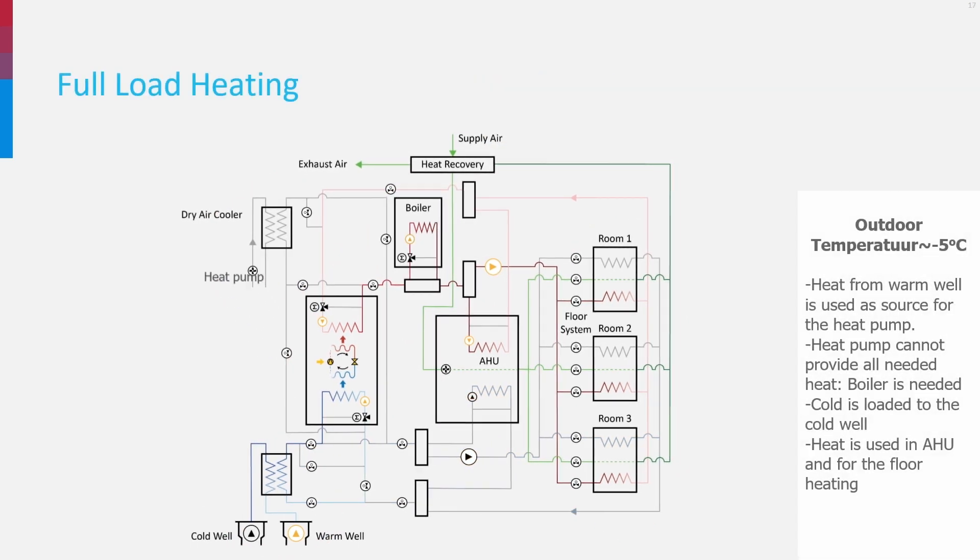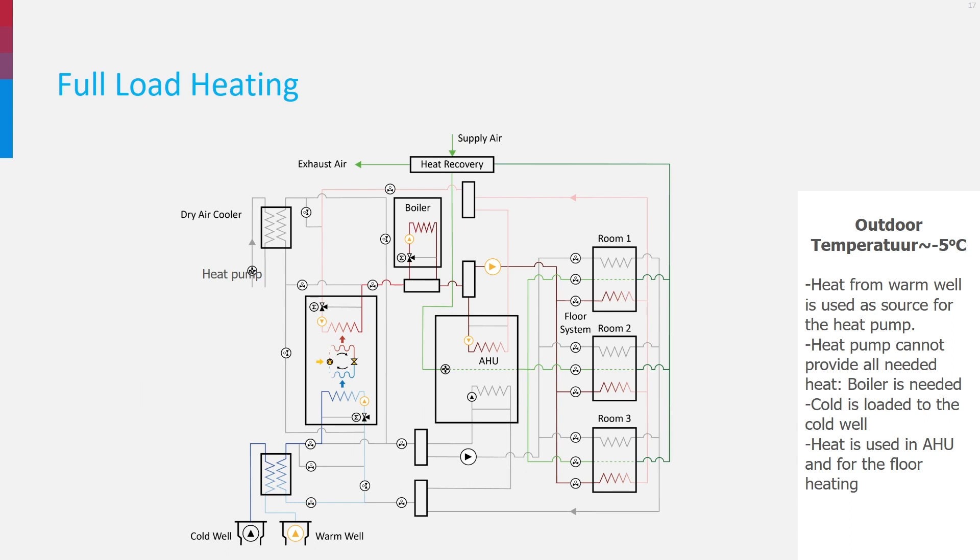When the system is in full load heating mode, which happens at cold outdoor temperatures, the heat pump uses the warm well as heat source, cold is therefore loaded in a cold well. The capacity of the heat pump is not high enough, so heating water is heated further in the boiler and distributed to the floor heating system and the heater in the air handling unit.